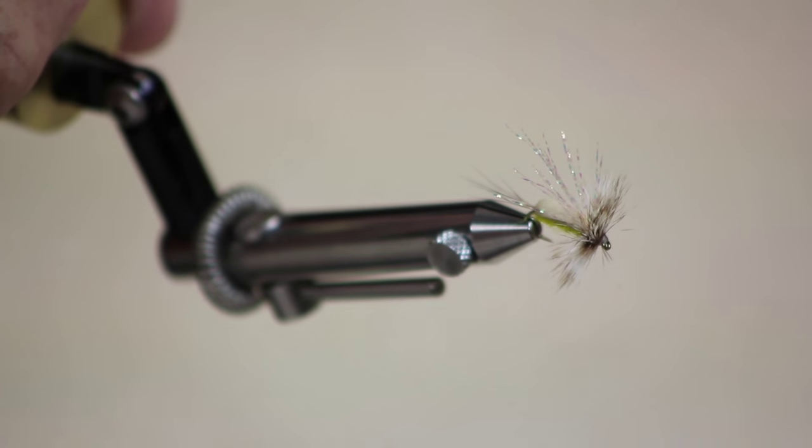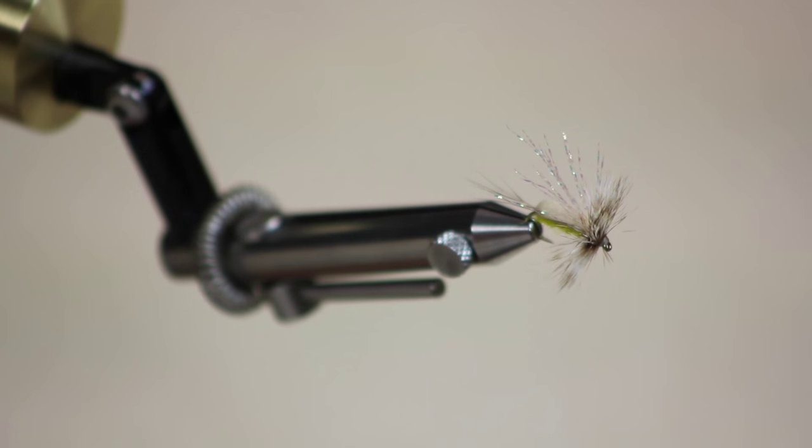With its foam back body and the crystal flash wing, it excels at both and the fish love it. This is what the fly is going to look like when we're through. It has some neat characteristics. It's easier to tie, it floats better, easier to see, and it's more durable.